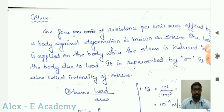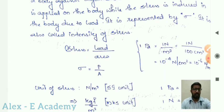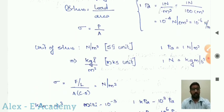Stress is equal to load by area. The definition is the force of resistance per unit area offered by a body against deformation. This is the sigma symbol. Stress is equal to load by area. Load unit is newton, area unit is meter square. Stress sigma is equal to newton per meter square.